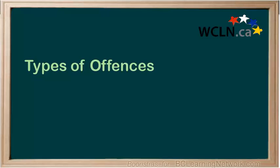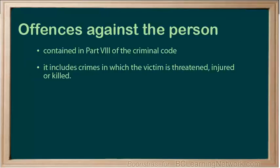There are several different types of criminal offences that we need to discuss. Offences against the person are contained in Part 8 of the Criminal Code. This includes crimes in which the victim is threatened, injured, or killed. Violent crime is actually decreasing in Canada, but it is considered very serious and therefore carries with it the stiffest penalties.